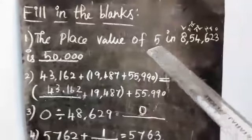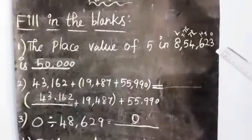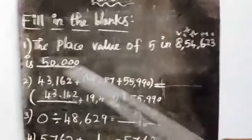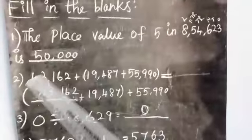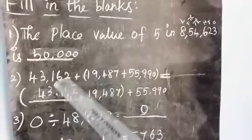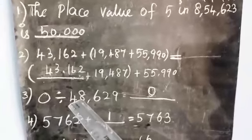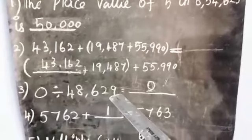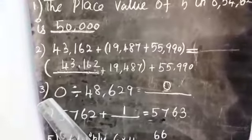Once again: the place value of 5 in 8,54,623 — 5 is in the 10,000s place, so 50,000. For the addition grouping property, the answer is 43,162. And 0 divided by 48,629 — we get the answer 0.